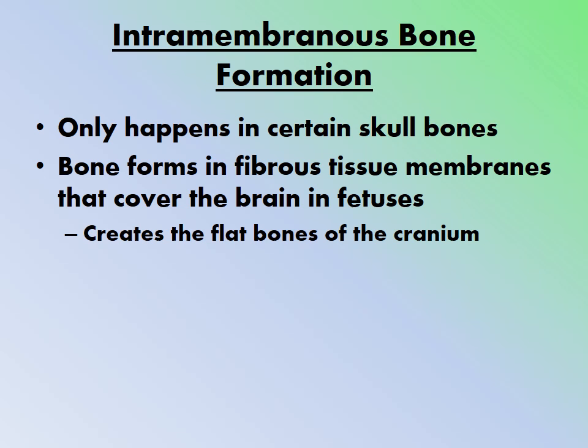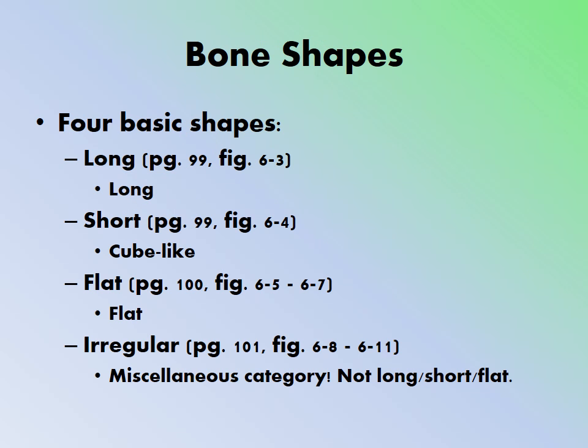Intramembranous bone formation is specific to certain skull bones. The bone forms in fibrous tissue membranes that cover the brain in the fetus, creating the flat bones of the cranium.